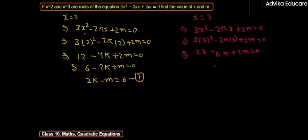We can rearrange: 6k - 2m = 27. So this will be our equation number 2.